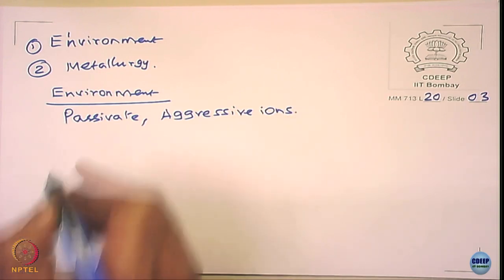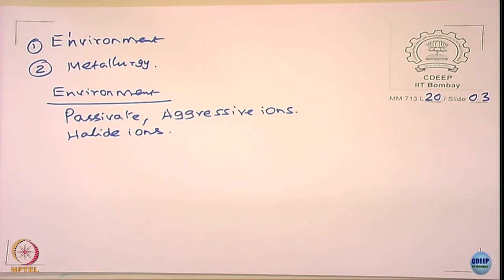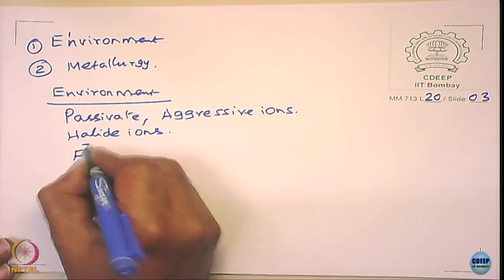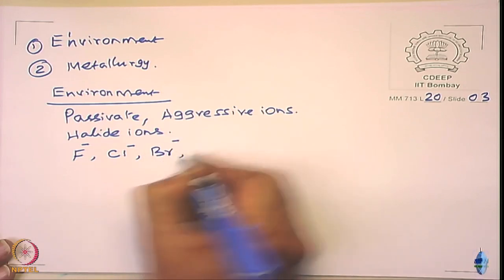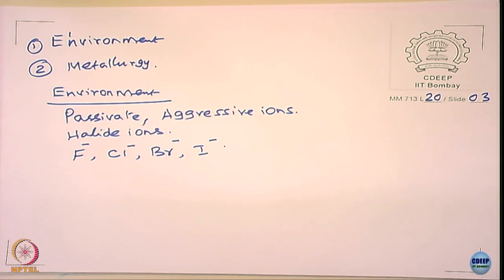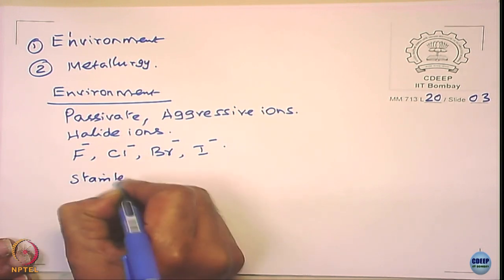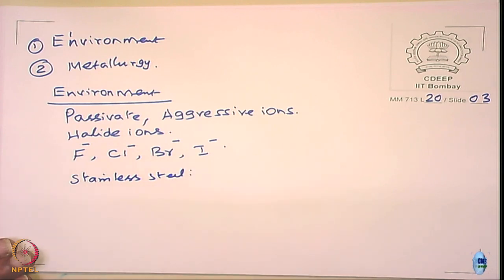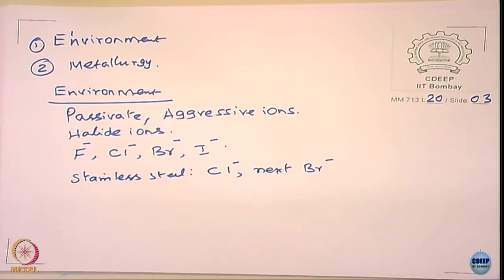Looking at environment factors: the condition is that the metal should passivate and you should have aggressive ions. Mostly halide ions are considered aggressive. What are these halide ions? They are chlorides, bromides, and iodides. When it comes to stainless steels, the most aggressive is chloride, next is bromide, and fluoride and iodide are not really that aggressive.